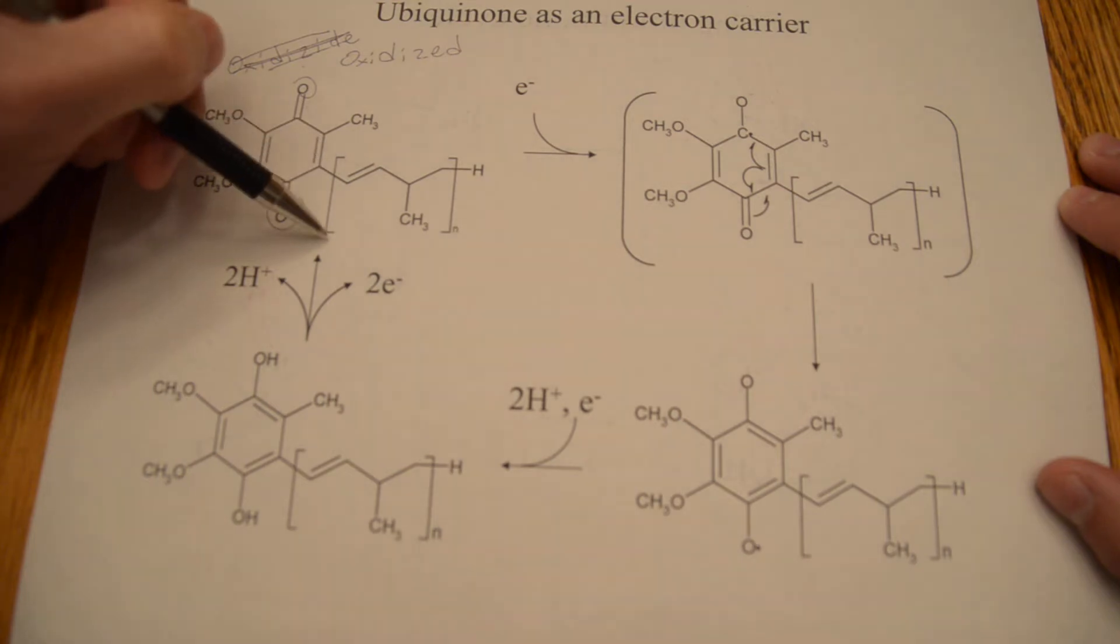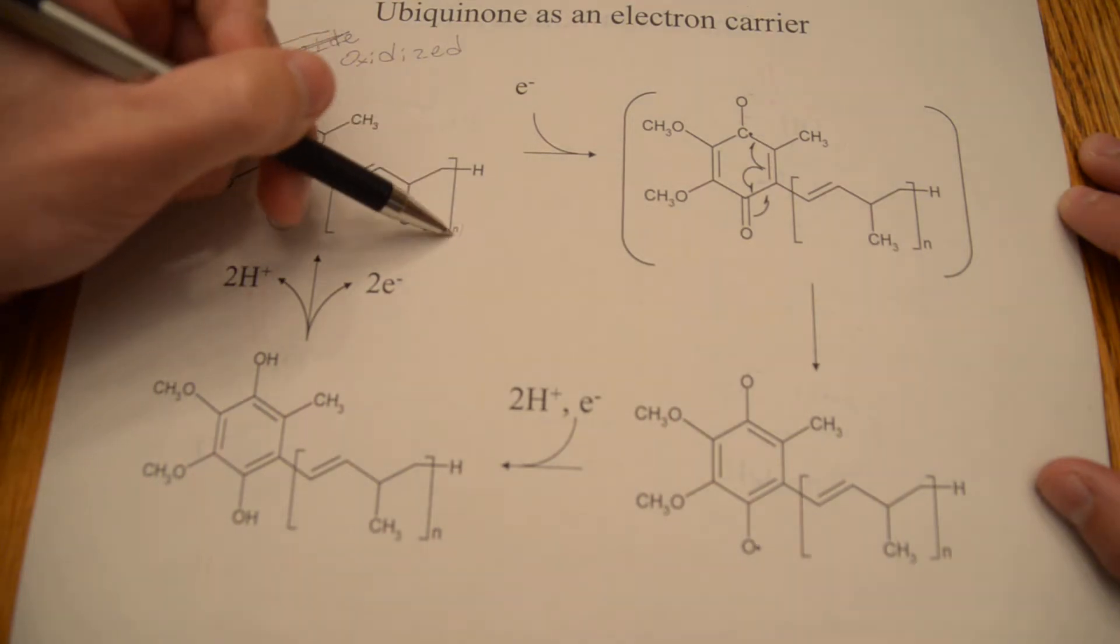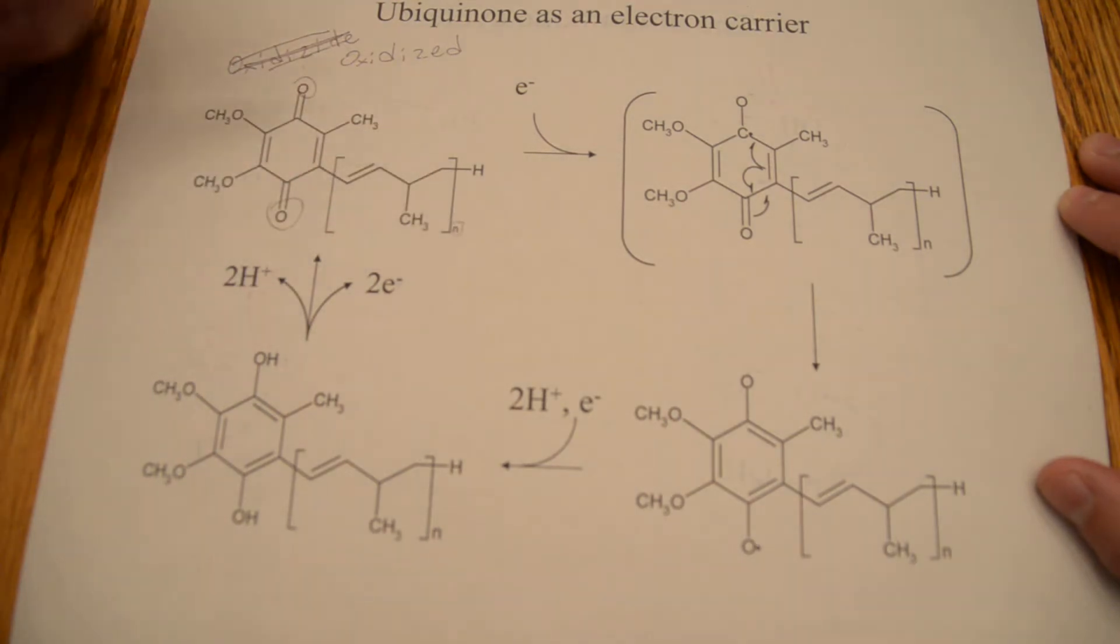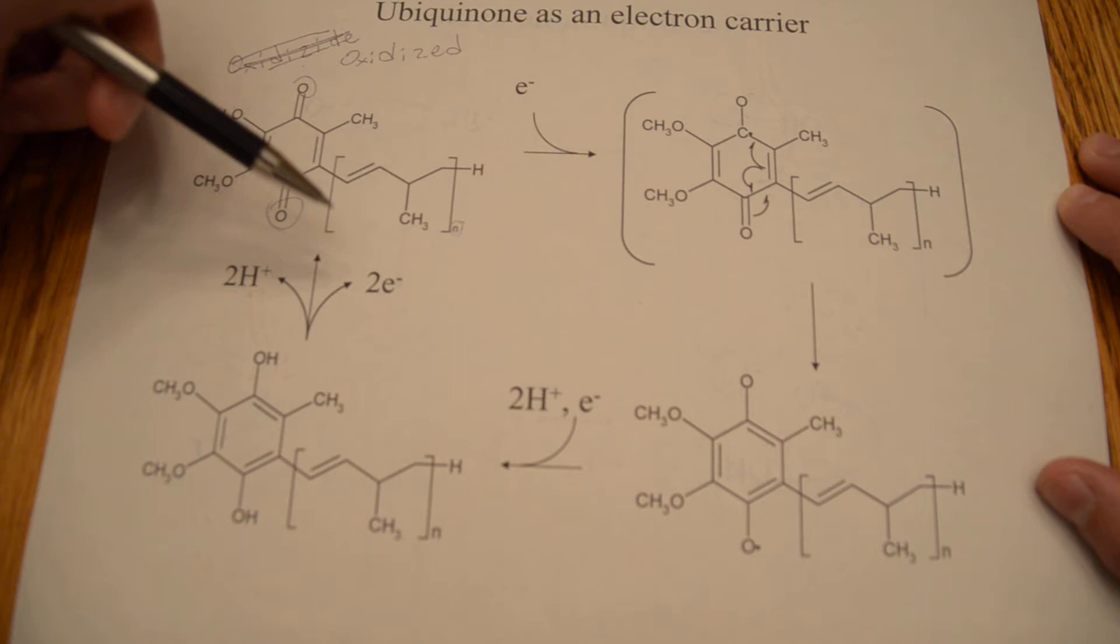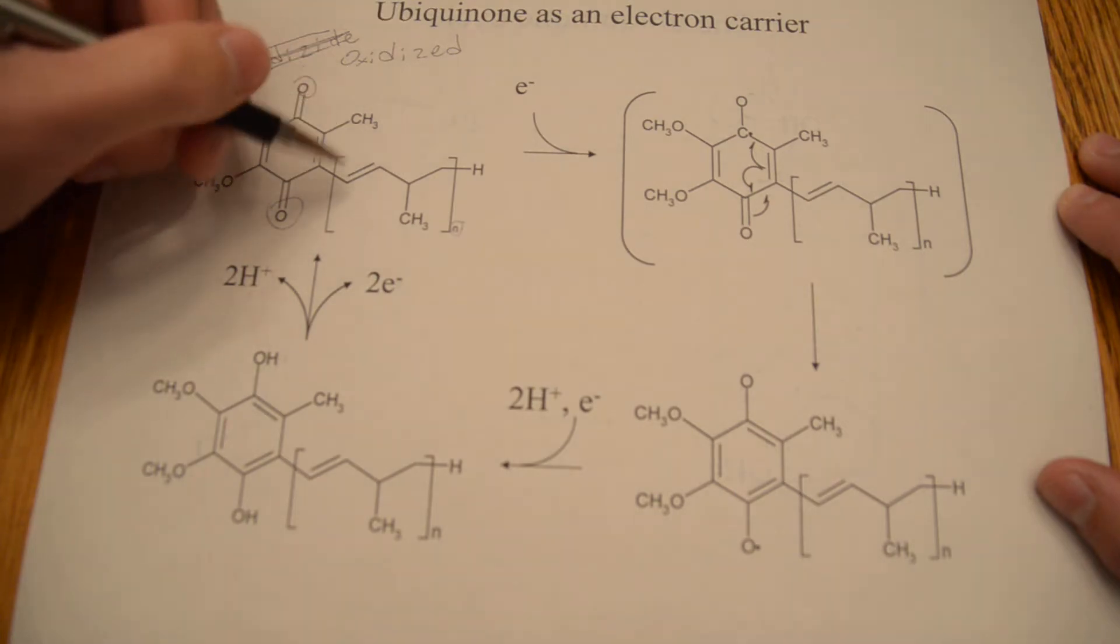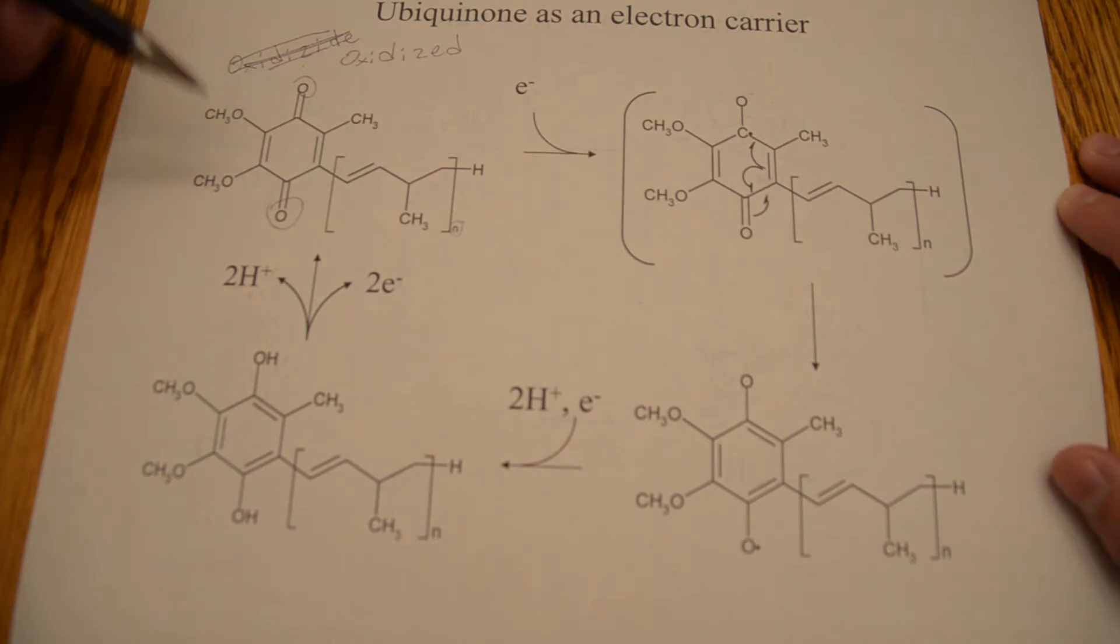And this long isoprene tail here, this N signifies that it is repeated over and over again, is the hydrophobic part of the molecule. So ubiquinone always stays inside the intermitochondrial membrane. It's a membrane molecule, not actually a protein.